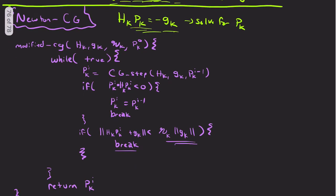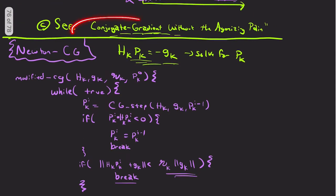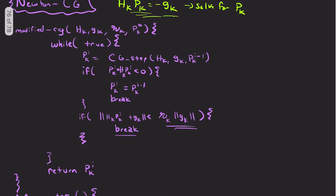So here's modified CG. So again, this CG step I won't go over. Come to this source here if you're curious. It's not too bad, but I don't want to waste too much time on it. So the main, these two points here, our termination conditions are the key points.